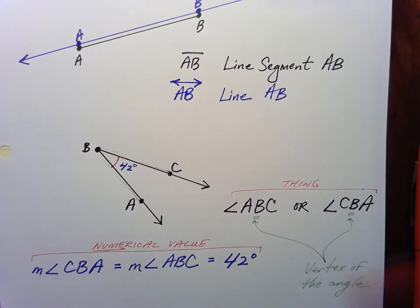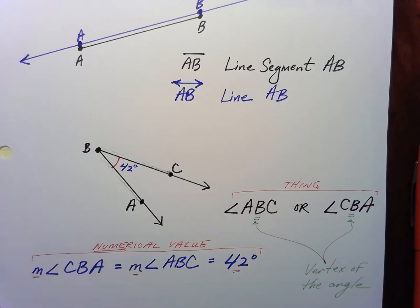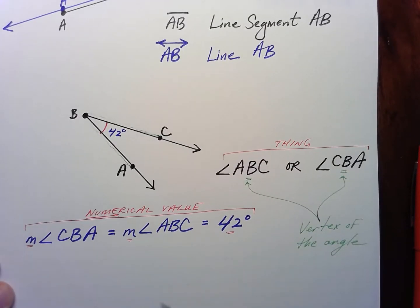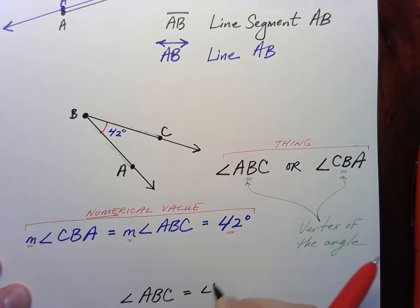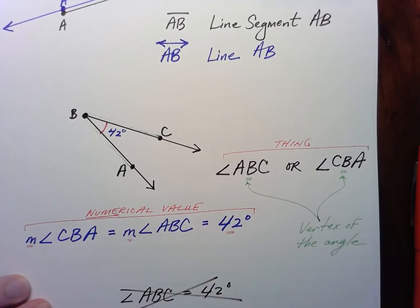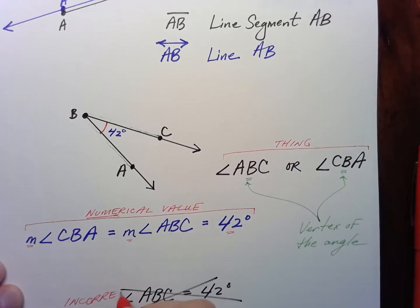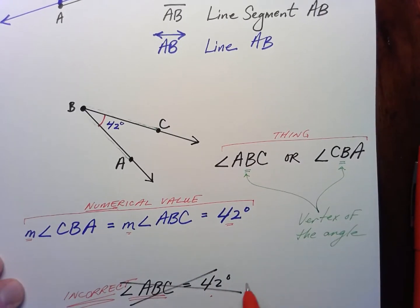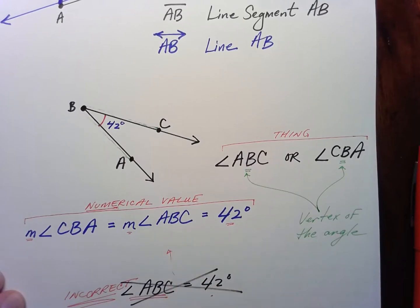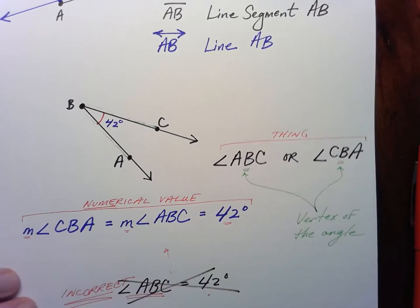A lowercase m means measure. That means we can actually give it a number value. So for example, it would be incorrect to say that angle ABC is 42 degrees — that is incorrect. Because the angle itself is not a measure, but rather it has a measure. So we would write it with the measure notation. There's the angle, and then its measure — just something to think about.